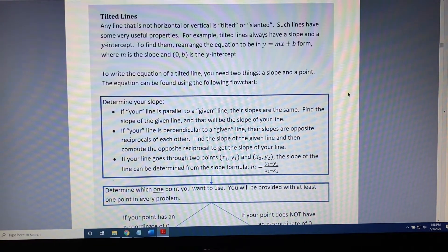To find them, rearrange the equation to be in slope-intercept form, y equals mx plus b, where m is the slope, and (0, b) is the y-intercept.